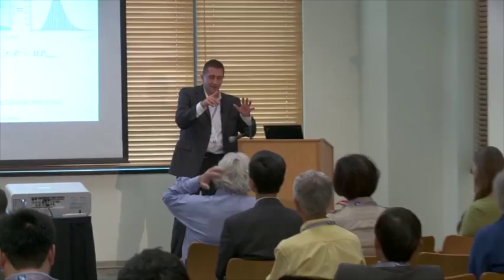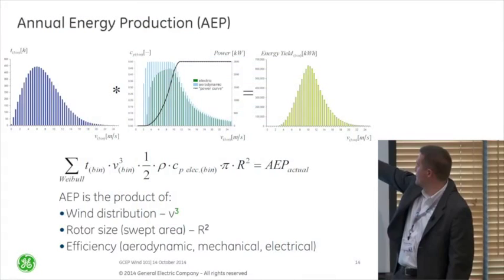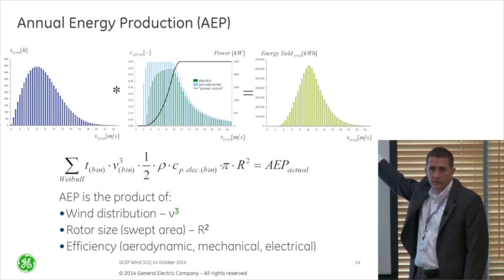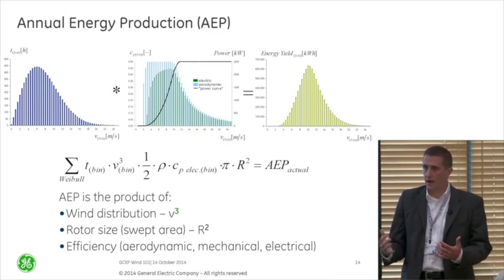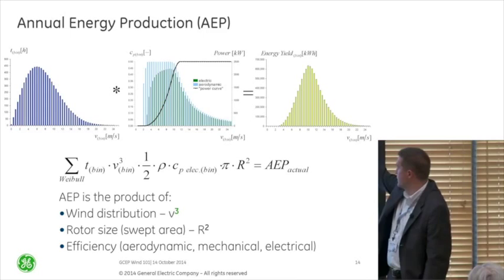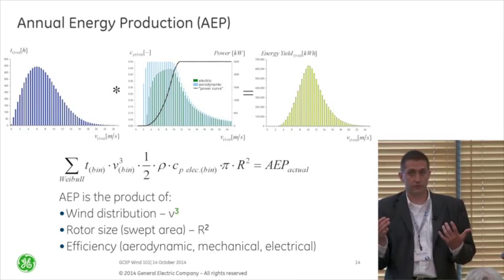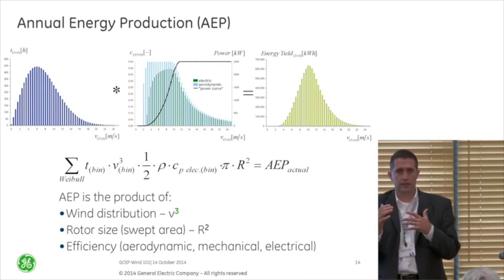A wind turbine is only as good as its annual energy production. If you take the wind distribution from the top left, overlay the power curve, you come up with an energy yield — and that's really what we do for any project we're looking at for a customer. The interesting thing is that most of the energy you create is probably between 8 and 12 meters per second. Between 8 and 10 is really important for CP, while between 10 and 12 is really important in how you handle your peak shaver and control aspects.